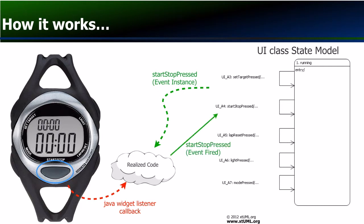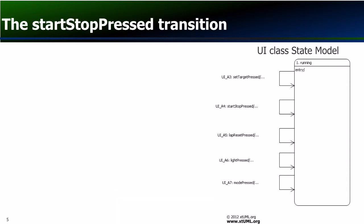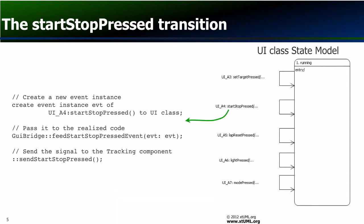This call delivers the pre-created event instance into the queue of the modeled class state machine for the UI class. The resulting transition passes a new event instance to the Java implementation for caching and sends a signal appropriate to the event to whichever component is wired to the UI port. In the GPS watch example model, this recipient component is tracking.